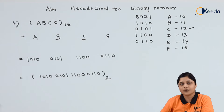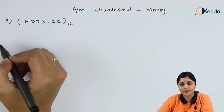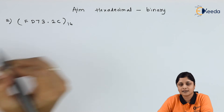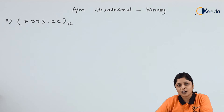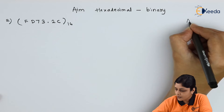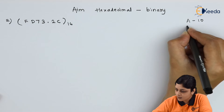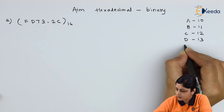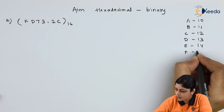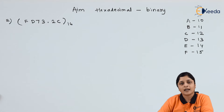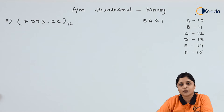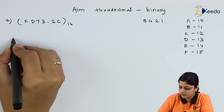Let's take the second example: FD73.2C to the base 16. Alphabets are present, so don't forget the table values: A is 10, B is 11, C is 12, D is 13, E is 14, F is 15. Then convert to binary using the 8-4-2-1 method.